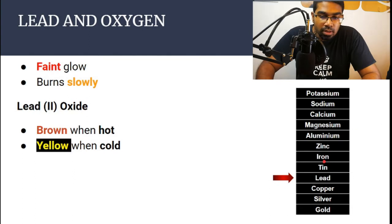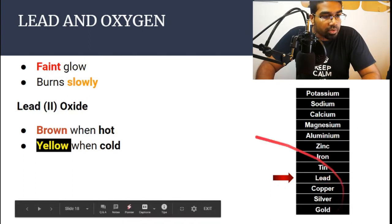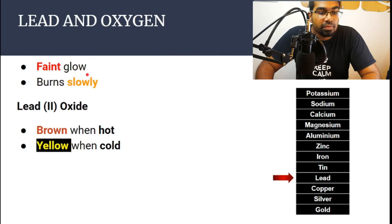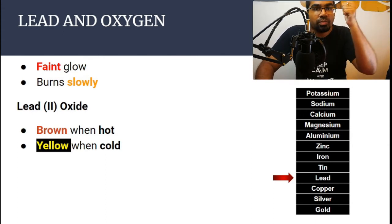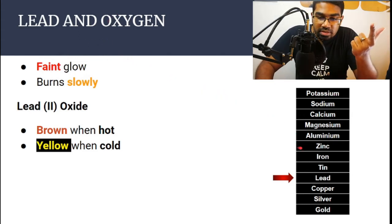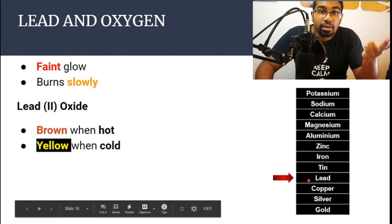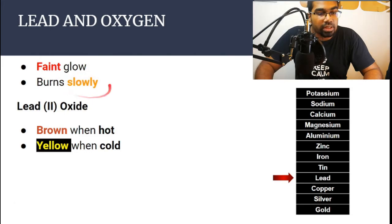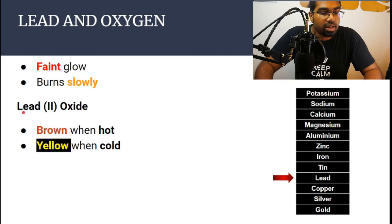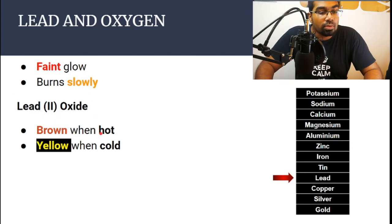Let's go down even further. Lead is very close to the bottom already. For lead, we have only a faint glow. You can see the trend as we go down: we started with a bright flame for magnesium, then a bright glow for zinc and iron, and now with lead it's even lower — only a faint glow — and it burns slowly, not rapidly like the rest. The product is lead 2 oxide, which is also unique: it is brown when hot, and after it cools down it becomes yellow.